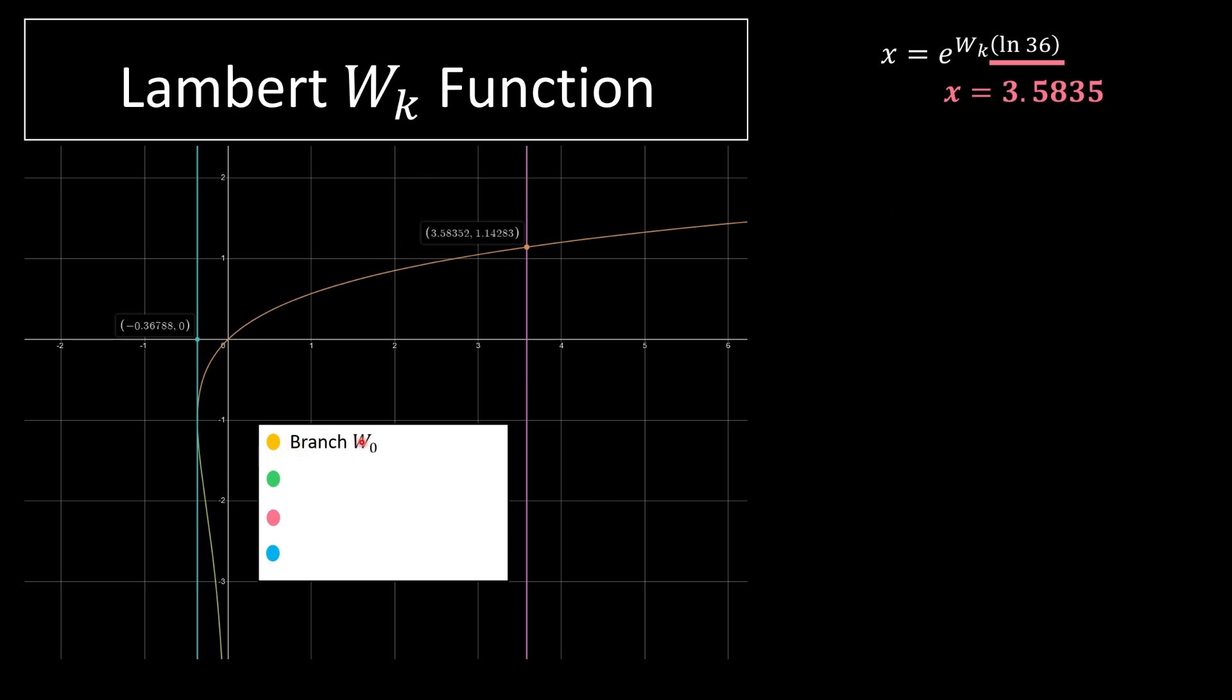Branch W0 is this curve over here, this orange curve. Branch negative 1 is this green line over here. It goes all the way to the bottom. Our value is this pink line, which is 3.5835. And the asymptote, this blue line is over here.